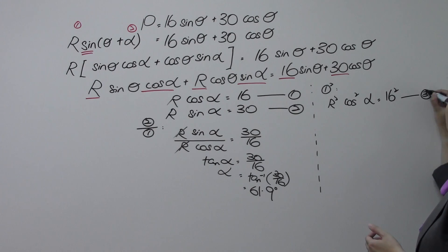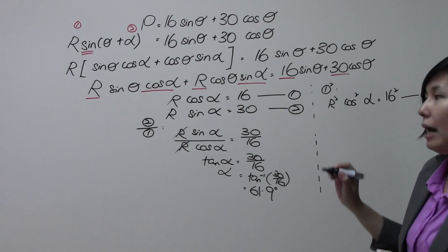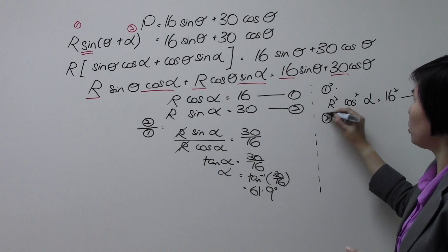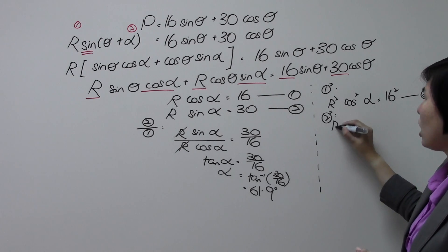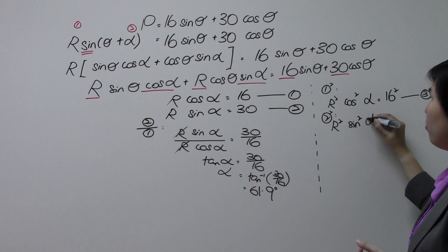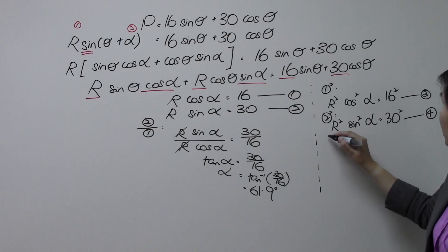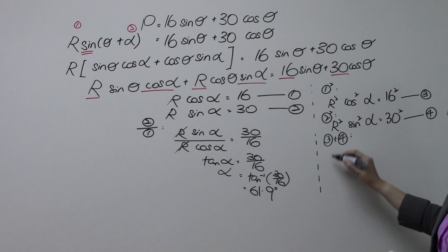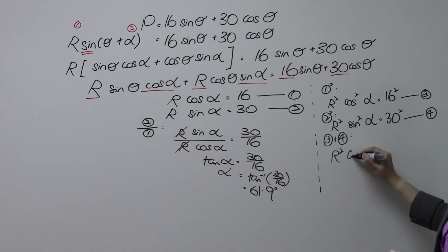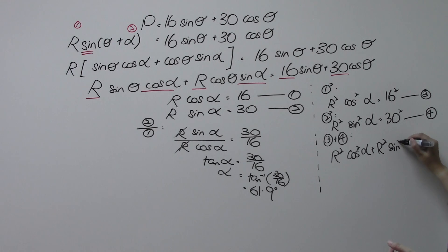We can see this as equation number 3, if you like it. And then equation number 2, go ahead and square it as well. That will give us R square sine square alpha equals to 30 square. This is equation number 4. What we're going to do is, we're going to add up both the equation. Which will give us R square cosine square alpha plus R square sine square alpha equals to 16 square plus 30 square.